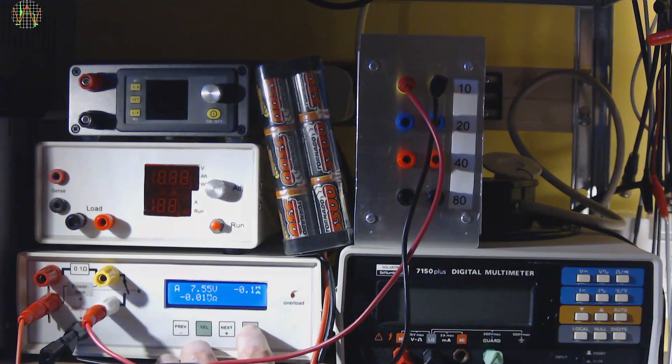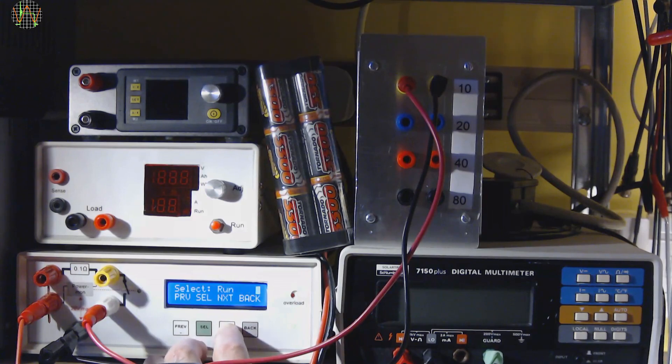Let's say you want to measure the discharge curve and capacity of a battery. Naturally the battery is on the supply side of Powermon with the red terminals and the load resistor on the yellow or white load terminals.